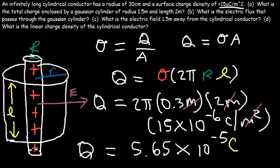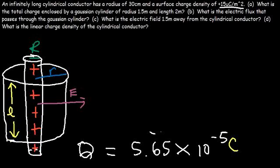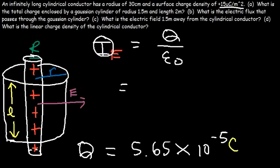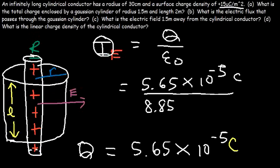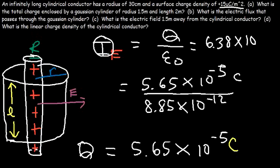Now for Part B: what is the electric flux that passes through the Gaussian cylinder? We can use Gauss's law, which states that the electric flux through a Gaussian surface equals the total charge enclosed divided by epsilon-naught. So it's Q = 5.65×10⁻⁵ coulombs divided by 8.85×10⁻¹², which gives 6.38×10⁶ newton·meters² per coulomb.